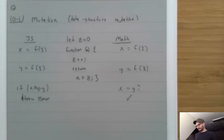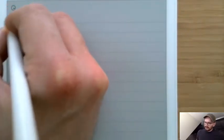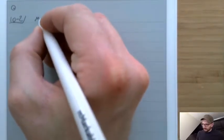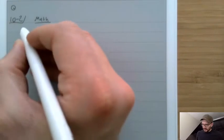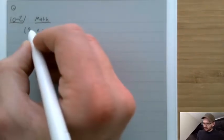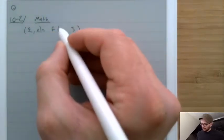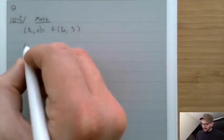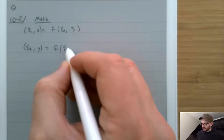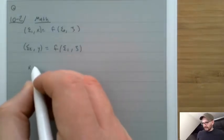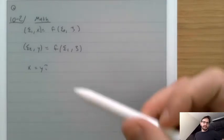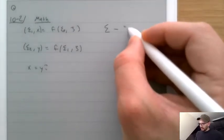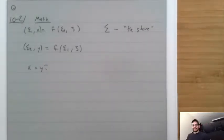Here's the essence of the idea. In the math formalism, rather than writing x equals f(3), we're going to say that sigma1 and x equals calling f with sigma0, and then sigma2 and y equals f of sigma1 and 3. Now x and y can differ because here we got sigma0 and there we got sigma1. This extra thing, sigma, is called the store, and what the store does is it records all of the changes to memory that might have happened while a program was running.